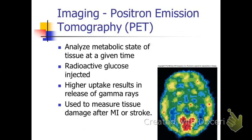Finally, there are PET scans — positron emission tomography. In this example, you use radioactive glucose, a sugar taken up by all your cells as an energy source. With computer enhancement, you can see on this brain scan the red area, which would be considered a hotspot.